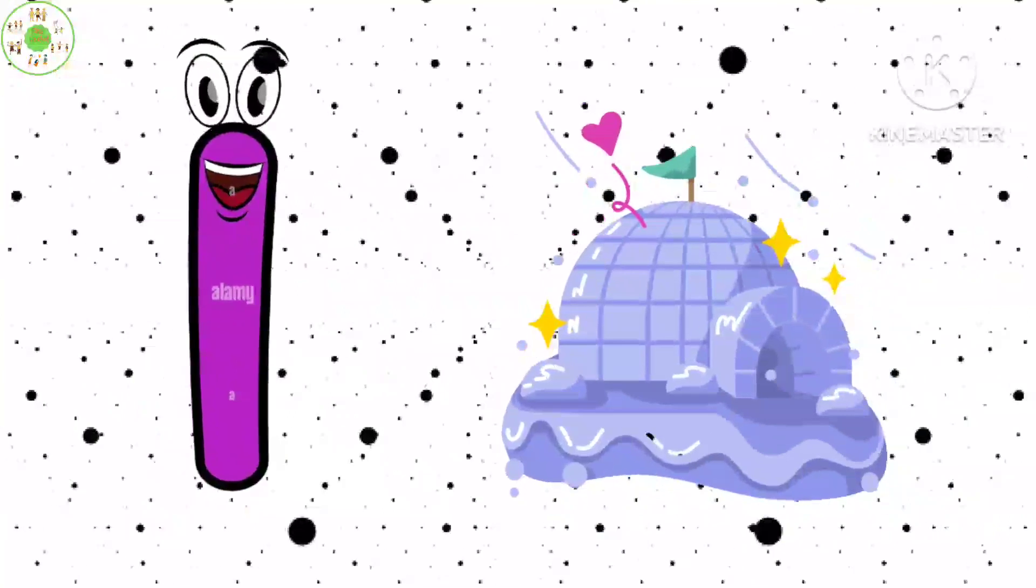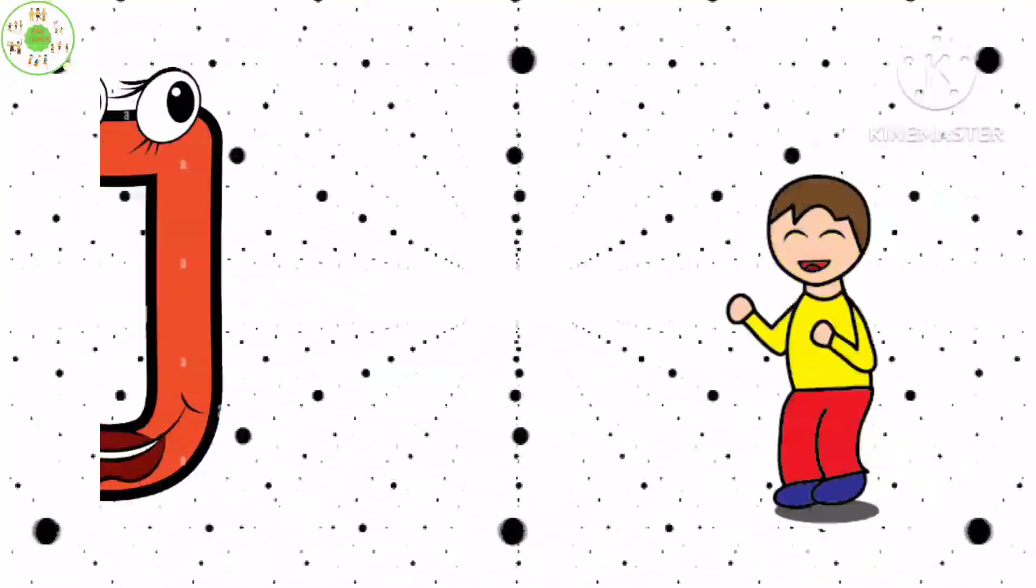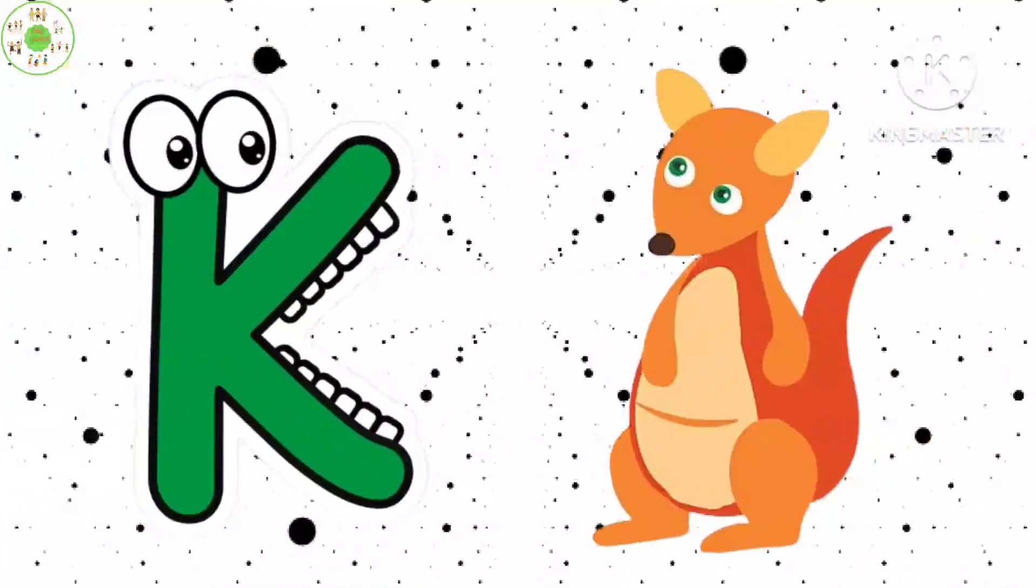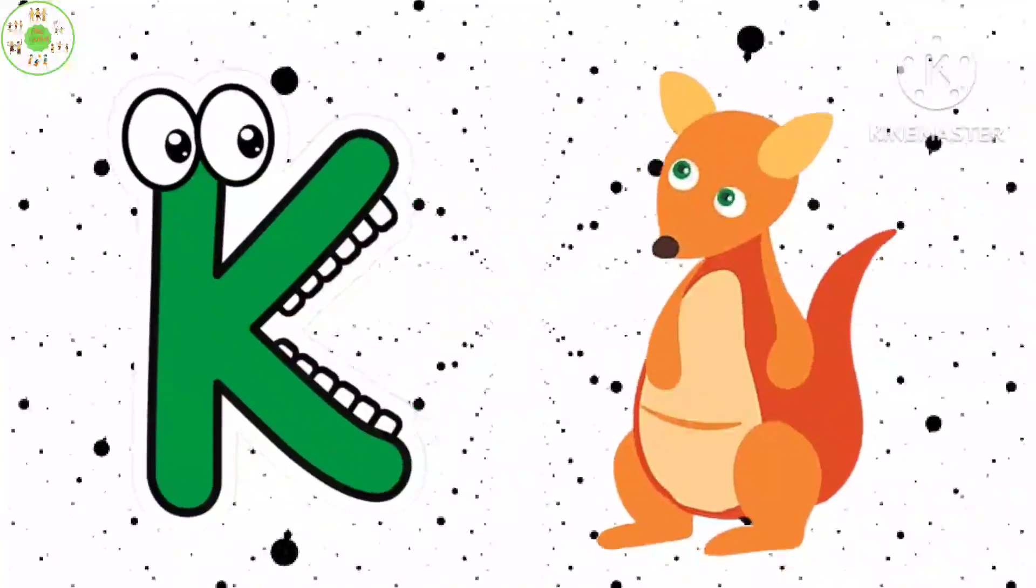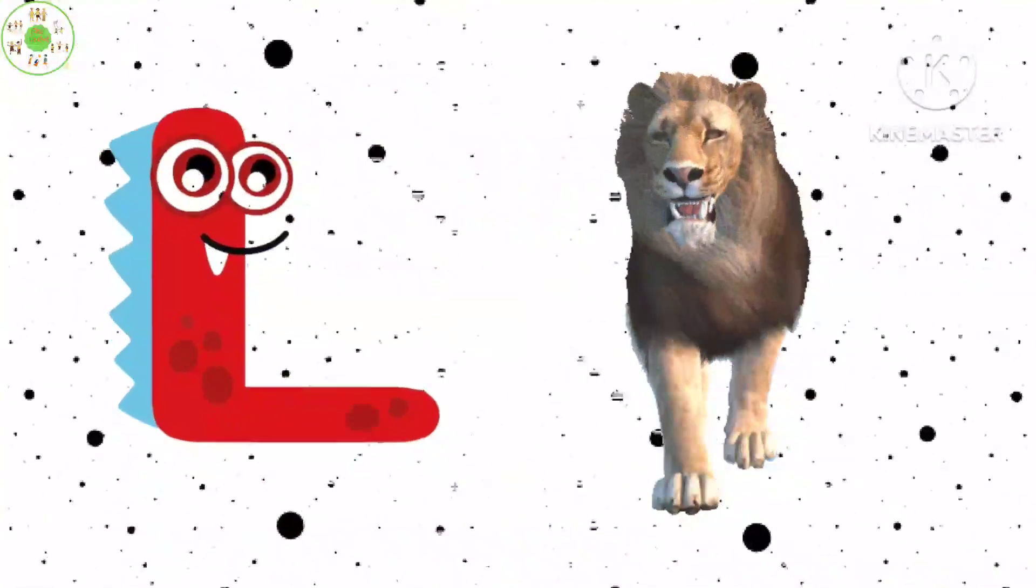I is for Igloo, I-I-Igloo. J is for Jump, J-J-Jump. K is for Kangaroo, K-K-Kangaroo. L is for Lion, L-L-Lion.